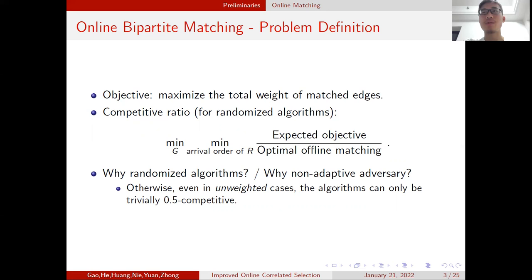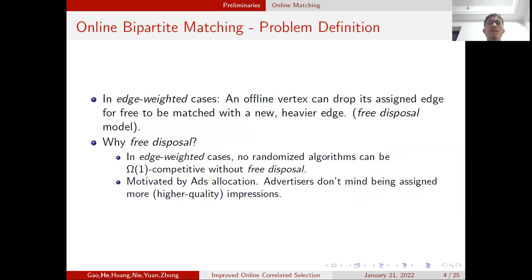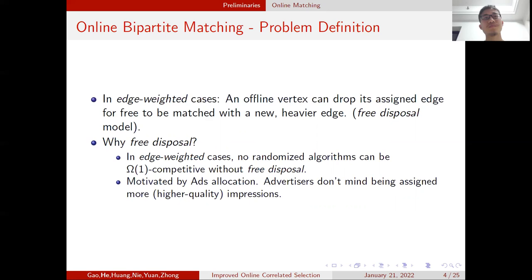Why do we need randomized algorithms with a non-adaptive adversary assumption? Because otherwise, even in the unweighted case, the algorithm can only be trivially 0.5 competitive. In the edge-weighted case, we need an additional assumption called the free-disposal model, where an offline vertex can drop its current edge for free to be matched with a new higher-weight edge. Without free disposal, no randomized algorithm can be better than O(1) competitive in the edge-weighted case. This is also motivated by ad allocation, where advertisers don't mind being assigned higher-quality impressions.